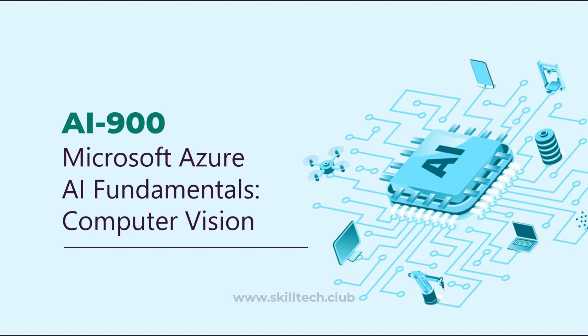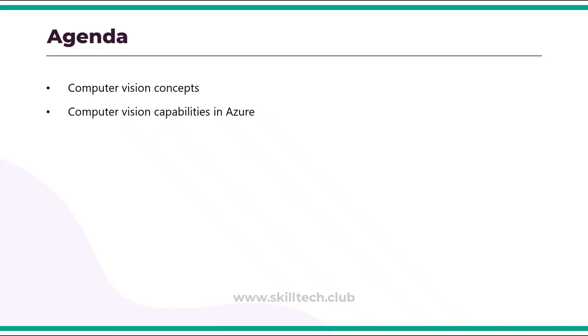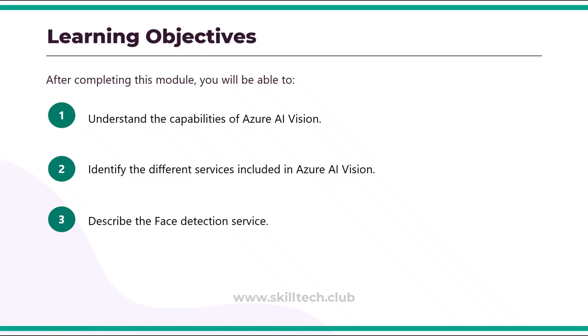In this module we are going to focus on Microsoft Azure AI fundamentals for computer vision. This is a very important and interesting module of the AI-900 course. Computer vision is one of the core areas of artificial intelligence, and it focuses on creating solutions that enable AI applications to see the world and make sense of it. In this module we are going to focus on computer vision concepts and the capabilities available from the Azure cloud.